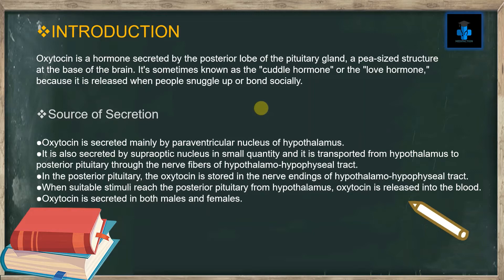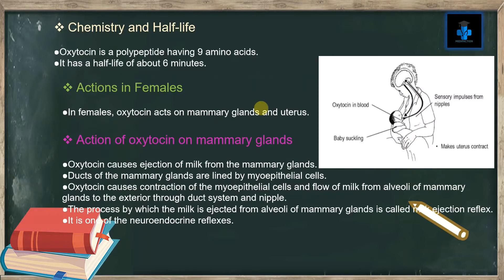Oxytocin is secreted in both males and females. Regarding chemistry and half-life, oxytocin is a polypeptide having nine amino acids. It has a half-life of about six minutes.